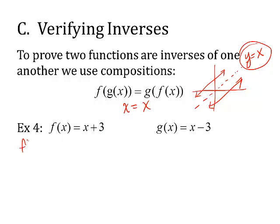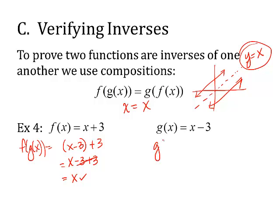Let's look at this: f(g(x)). I put g(x) into the equation: (x − 3) + 3, which simplifies to x. That one's good. What about g(f(x))? I put in f, which is x + 3, minus 3. Drop the parentheses — that's 0, so I end up with x. Since both equal x, they are inverses of one another.